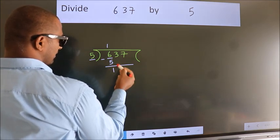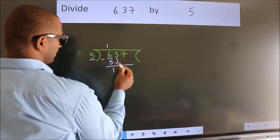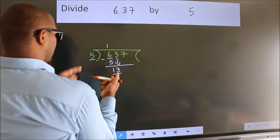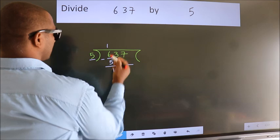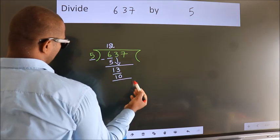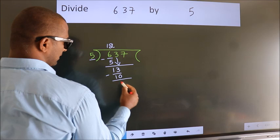After this, bring down the beside number. So 3 down, so 13. A number close to 13 in the 5 table is 5 twos is 10. Now we subtract. We get 3.